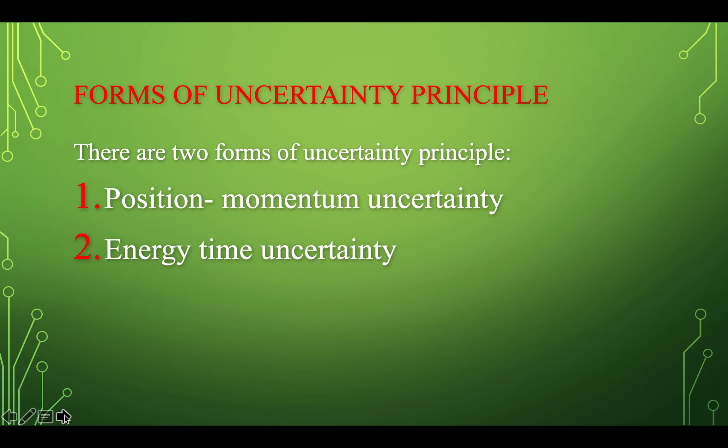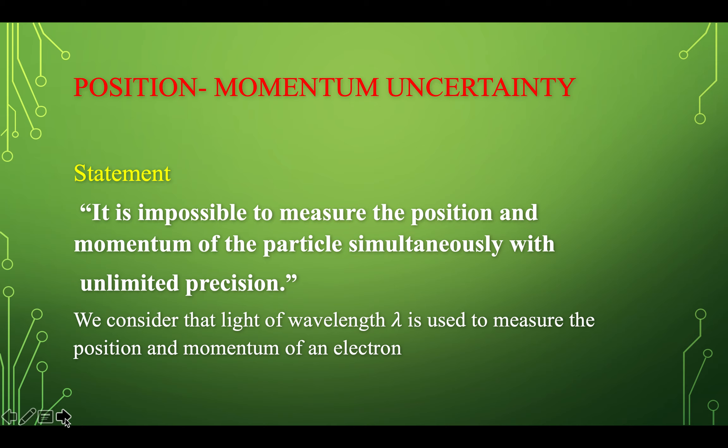There are two forms of the uncertainty principle: position-momentum uncertainty and energy-time uncertainty.